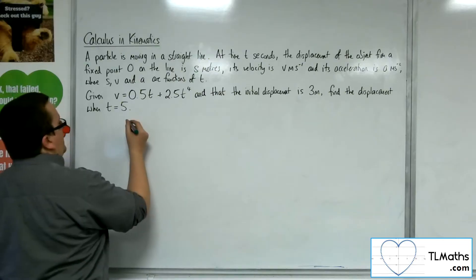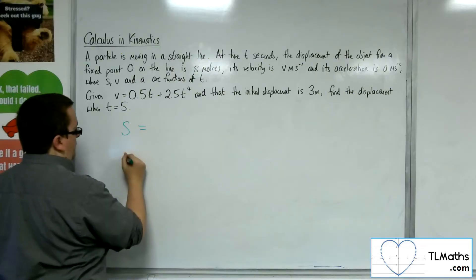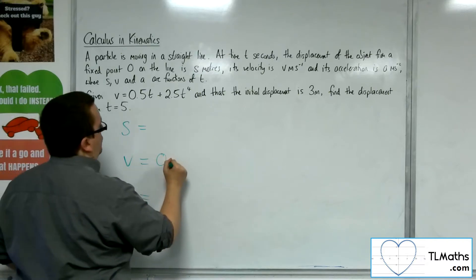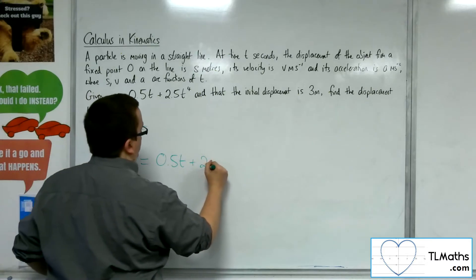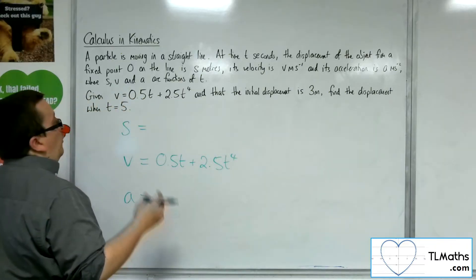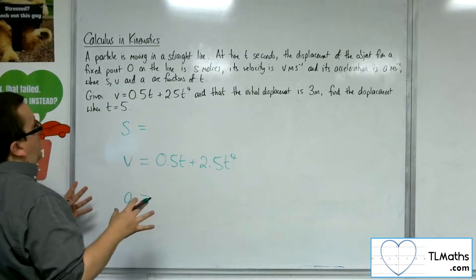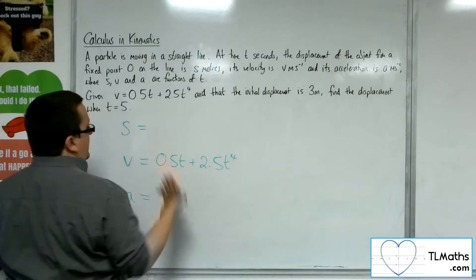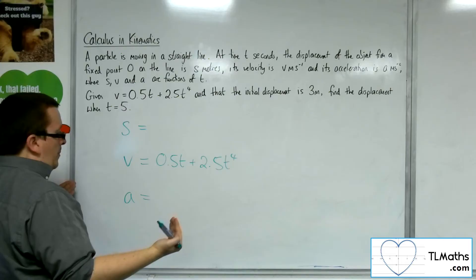So writing down s, v, and a. We're told that the velocity is 0.5t plus 2.5t to the 4. Now we want to find the displacement when t is 5, so we're going to need the equation for s, so we need to integrate our way up.